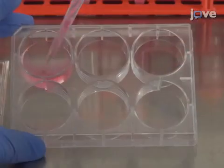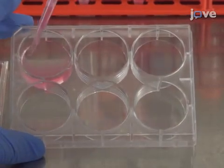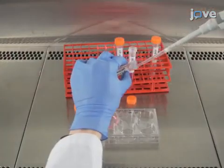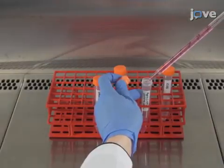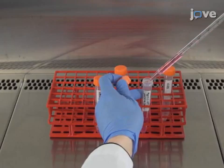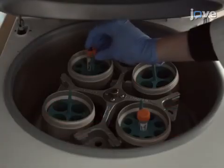Gently suspend the cells with a 1000 microliter pipette and transfer them to a 15 milliliter tube. Afterward, add 7 milliliters of DMEMF12 to the cell suspension and spin the cells at 200 times G for 5 minutes.